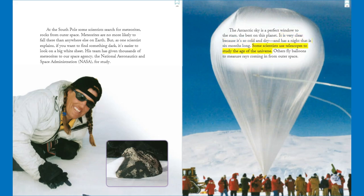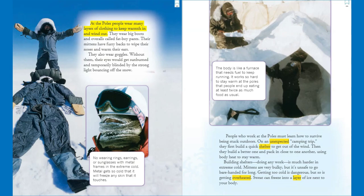Some scientists use telescopes to study the age of the universe; others fly balloons to measure rays coming in from outer space. At the poles, people wear many layers of clothing to keep warmth in and wind out. They wear big boots and overalls called fat boy pants. Their mittens have furry backs to wipe their noses and warm their ears. They also wear goggles — without them, their eyes would get sunburned and temporarily blinded by the strong light bouncing off the snow. No wearing rings, earrings, or sunglasses with metal frames, as in extreme cold, metal will freeze any skin it touches.